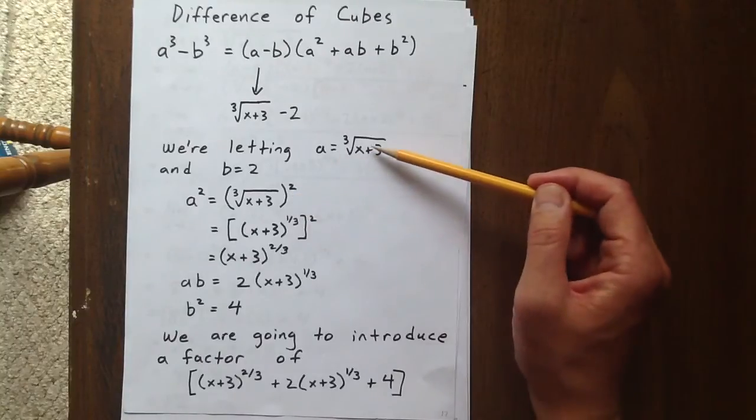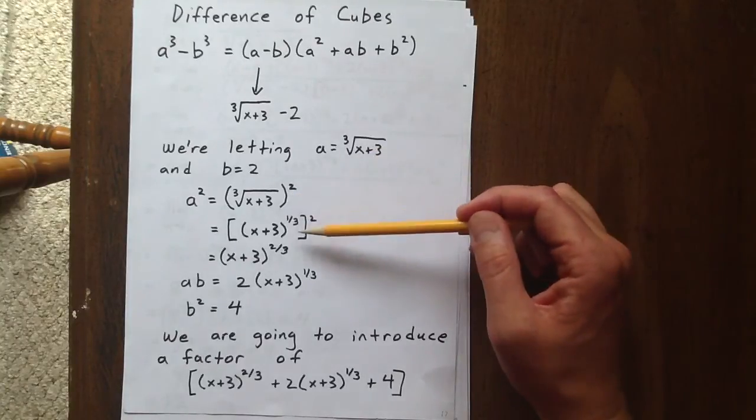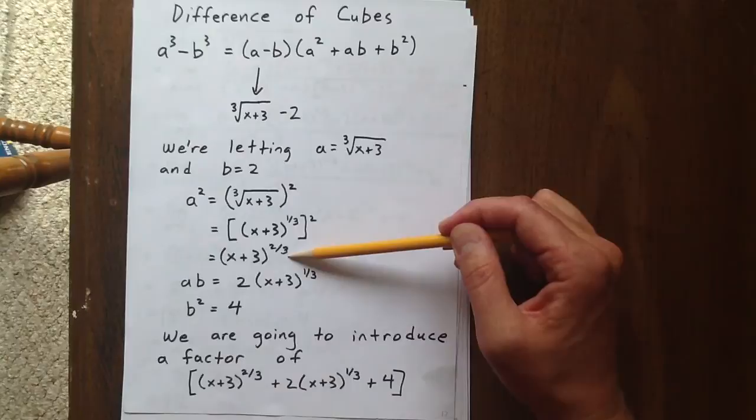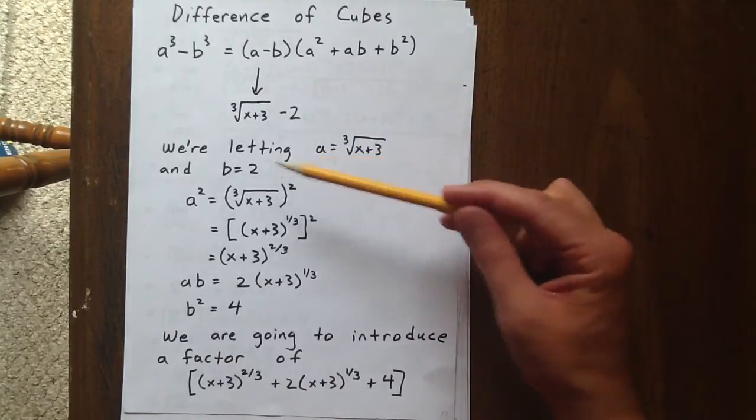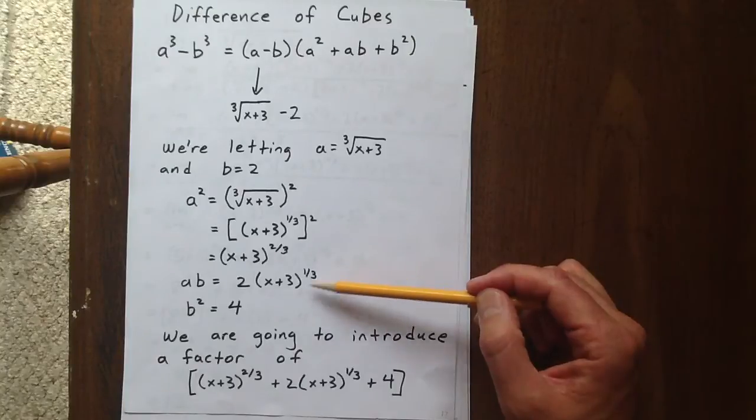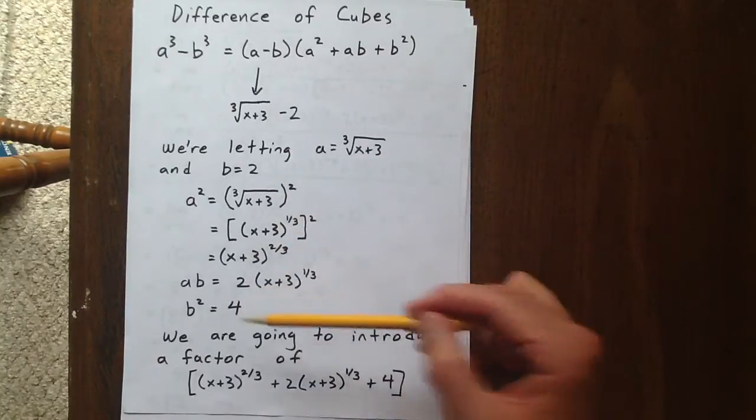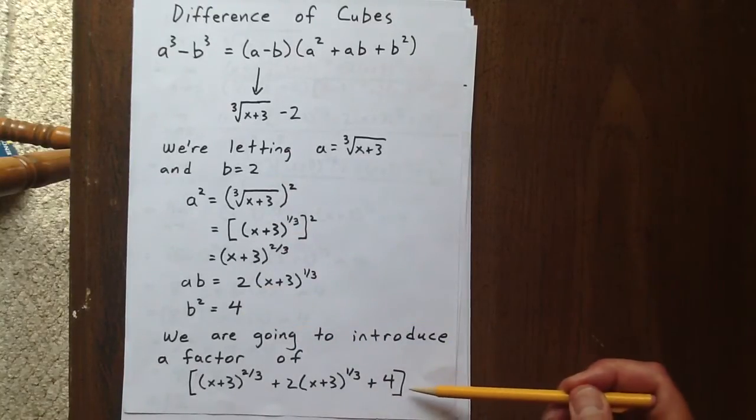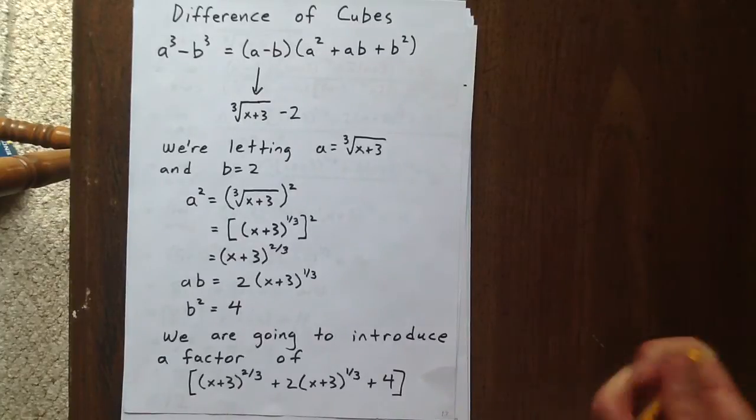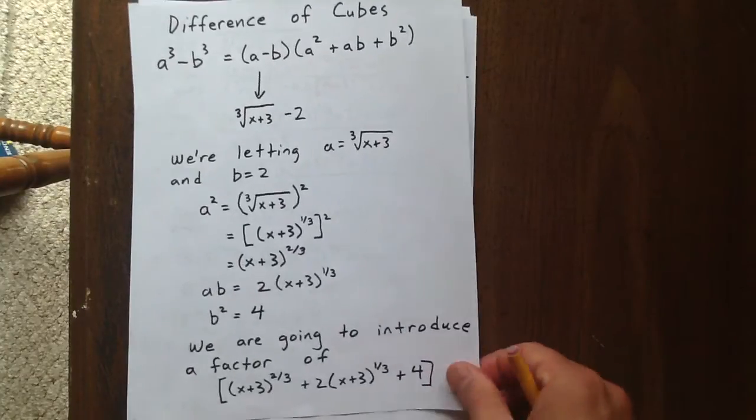Well if a is this expression right here then a squared is ultimately x plus 3 to the two-thirds. ab is 2 times x plus 3 to the one-third and b squared is 4. So we're going to introduce this new factor. But we're going to introduce it to the denominator and the numerator.